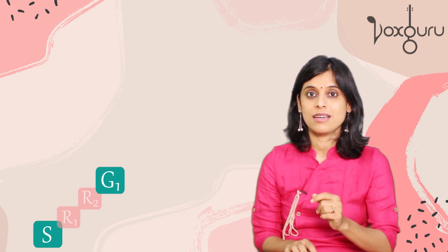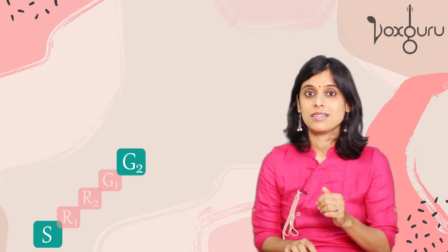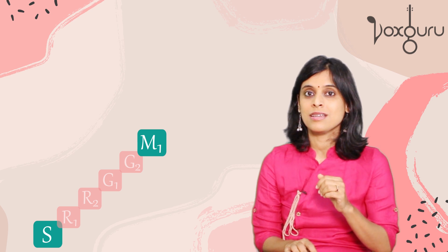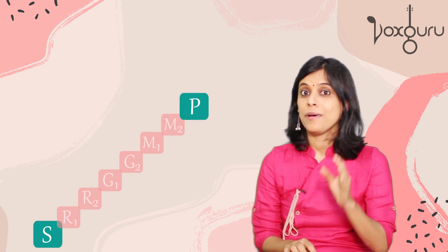So let's keep Sa as our reference and try to reach each and every note, starting from Ri 1 — Sa Ri. Then Ri 2 — Sa Ri. Then Ga 1 — Sa Ga. Ga 2 — Sa Ga. Ma 1 — Sa Ma. Ma 2 — Sa Ma.